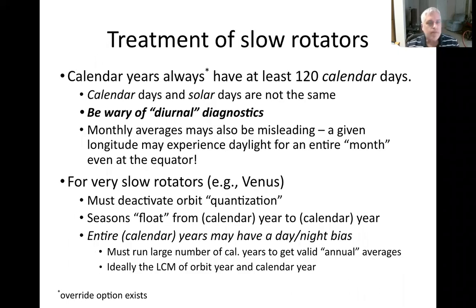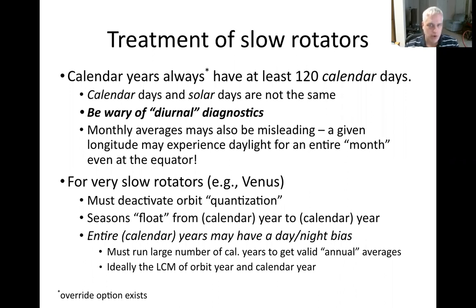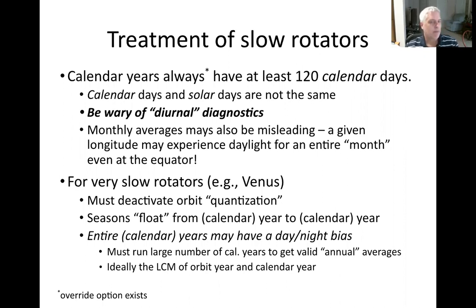When you have a slow rotator, you always have at least 120 calendar days in a year. Ordinarily 'day' means solar day — how long between noon one day and noon the next. But for slow rotators, a calendar day is no longer connected: one day could be entirely night, entirely day. Monthly averages can be misleading too — if you're a slow enough rotator, you can have an entire month that is daytime for your hemisphere. Usually you're talking about yearly averages as the smallest scale you can sensibly use for diagnostics.